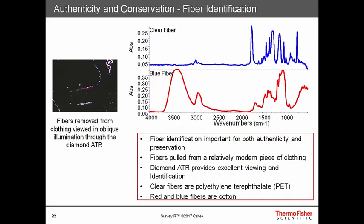We can also readily identify fibers using Surveyor. In the image on the left, we see several fibers in the field of view observed under oblique illumination with the diamond ATR. By touching the fibers, we can selectively measure their spectra. The blue spectrum is from a clear fiber with a very regular shape and habit, identified as polyethylene terephthalate or PET. We also measured a blue fiber — in the field of view you can see a blue fiber and a red fiber, which were actually the same material, cotton. Cotton is primarily cellulose and is a natural fiber, and the infrared absorption spectra of the synthetic versus natural fiber are very different and can be differentiated readily.